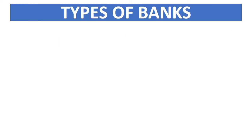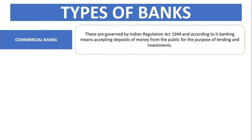Types of bank — the first type is commercial bank. These banks are governed by the Indian Regulation Act 1949, and according to it, banking means accepting deposits of money from the public for the purpose of lending and investment.